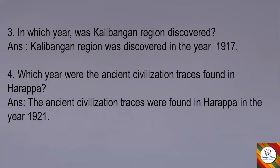Next question: In which year was Kalibangan region discovered? Answer: Kalibangan region was discovered in the year 1917. Fourth question: Which year were the ancient civilization traces found in Harappa? Answer: The ancient civilization traces were found in Harappa in the year 1921.